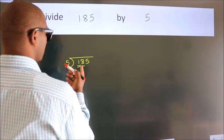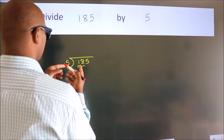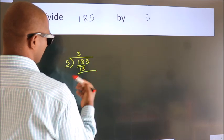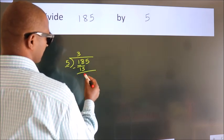A number close to 18 in the 5 table is 5 threes, 15. Now we should subtract. We get 3.